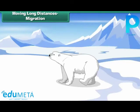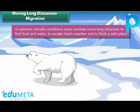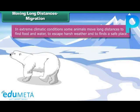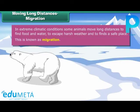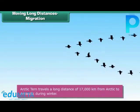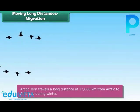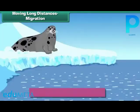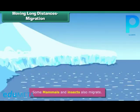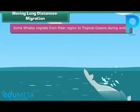Moving long distances — Migration. In extreme climatic conditions, some animals move long distances to find food and water, to escape harsh weather, and to find a safe place. This is known as migration. The Arctic tern travels a long distance of 17,000 km from the Arctic to the Antarctic during winter. Some mammals and insects also migrate. Some whales migrate from polar regions to tropical oceans during winter.